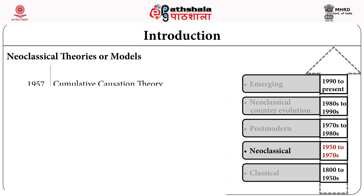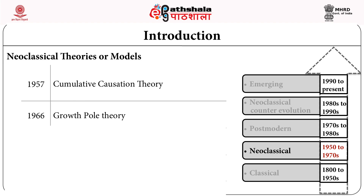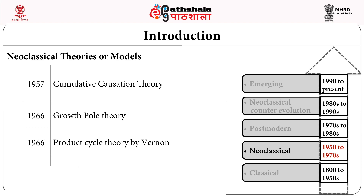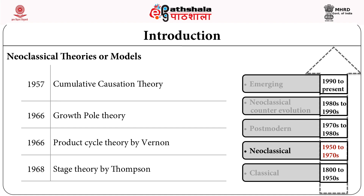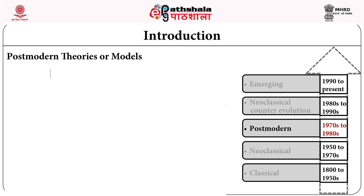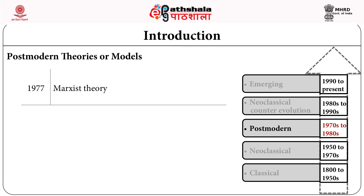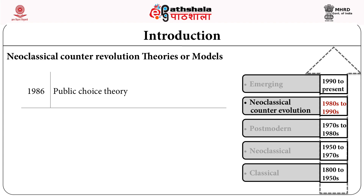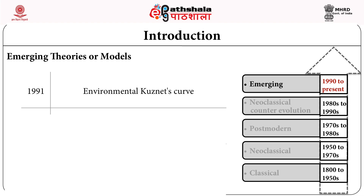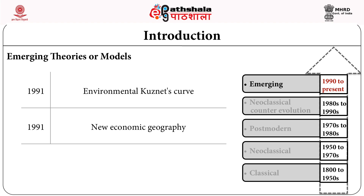In the neoclassical theories, we have: the cumulative causation theory in 1957, the growth pole theory in 1966, product cycle theory by Vernon in 1966, and stage theory by Thompson in 1968. The postmodern category includes the Marxist theory in 1977. The neoclassical counter-revolution includes the public choice theory in 1986. Emerging theories include the environmental Kuznets curve and neo-economic geography, both in 1991.